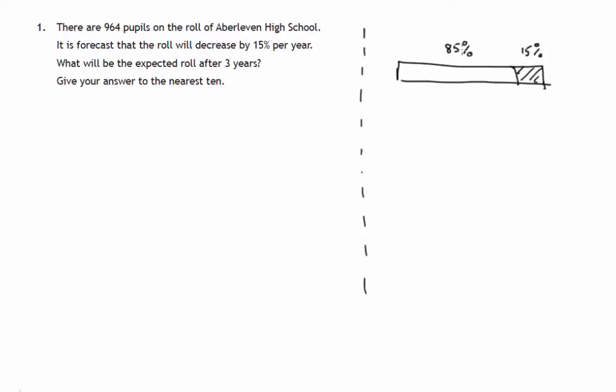Calculating 85% is finding 85 hundredths, which is a decimal of 0.85. Multiplying this by 0.85 will produce 85%. In other words, for a 15% decrease, the multiplier is 0.85.